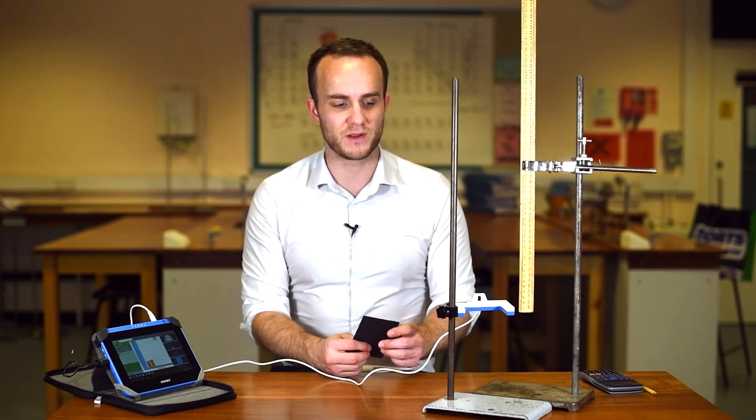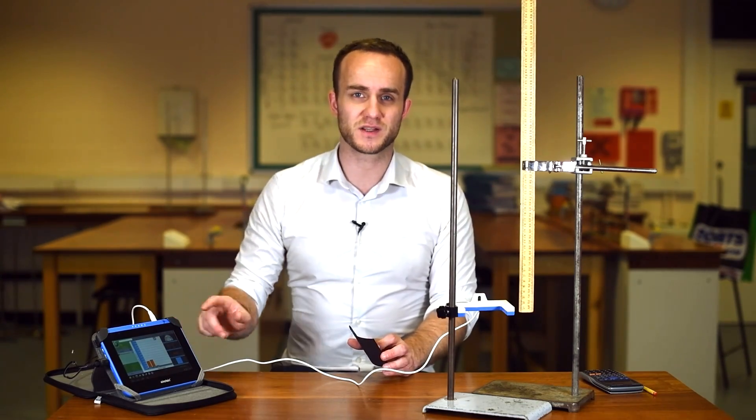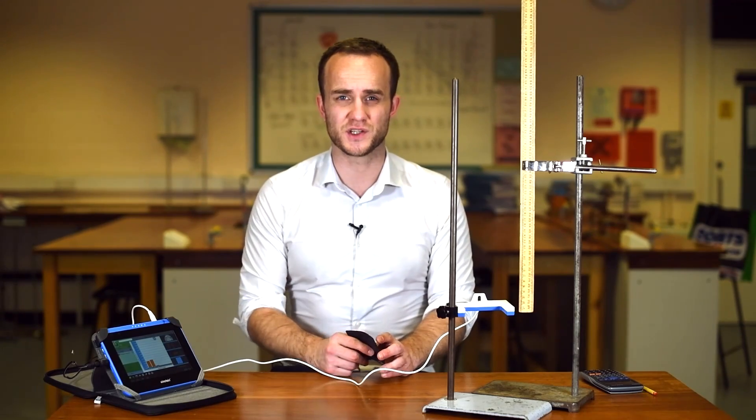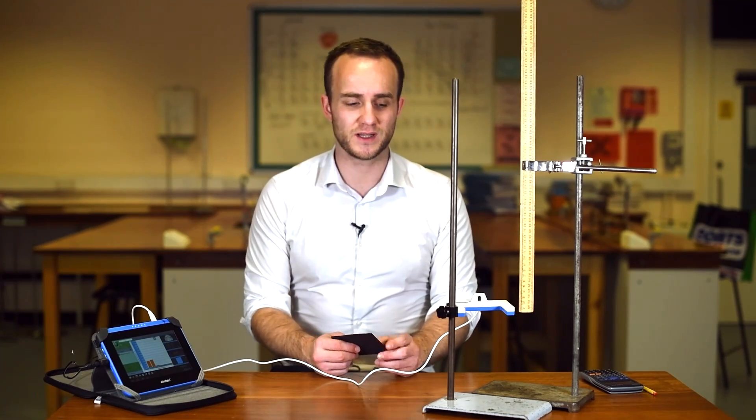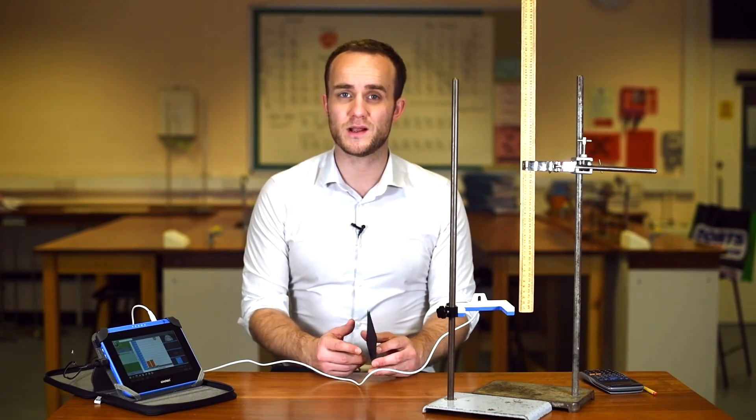Here is my light gate here. Every time something passes in between the beam, the data logger that it's connected to starts timing. So effectively this is just a posh stop clock. It times how long it takes for the card to go through the beam. It then calculates speed.